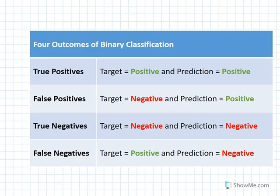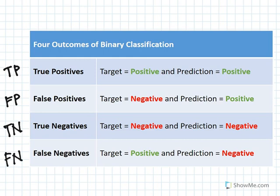What are these four different outcomes? The first one is true positive — when your actual data is positive and your model predicts it as positive. Then we have true negative, when your actual data is negative and your model predicted correctly as negative. We have false positive, where your target is negative and what is predicted is positive. And false negative, where your target is positive and your model predicted it as negative.